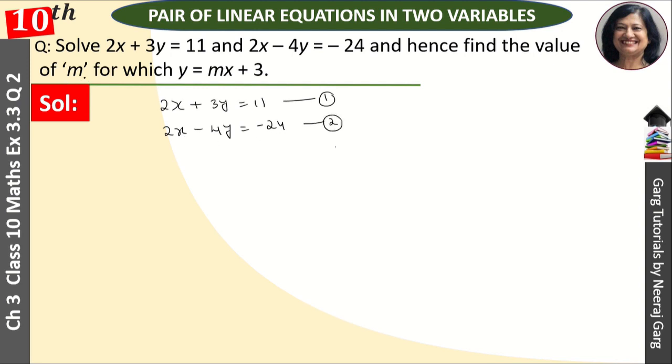Solve karne ke liye hamein m ki value nikalni hai aur m ki value ke liye hamein y aur x ki value nikalni hai. So second equation se 2x ki value nikalte hain. 2x is equal to kitna aa gaya? Minus 24 aur plus 4y. So yeh aa gayi humari paas third equation aur is 2x ki value ko hamein kisme put kar denge? First ke andar. Putting in one.